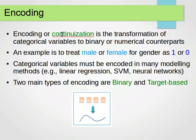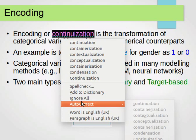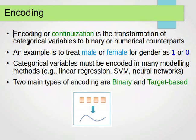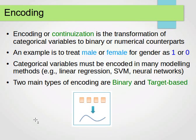Encoding or continuization is the process of transforming categorical variables to binary or numerical counterparts. An example is if we have a categorical variable that represents gender, male or female, we can remove those and use one or zero.